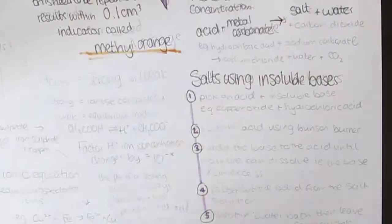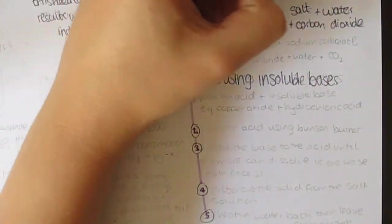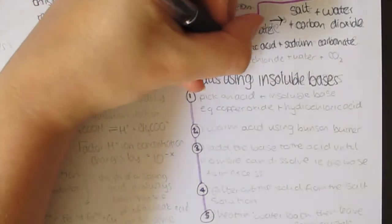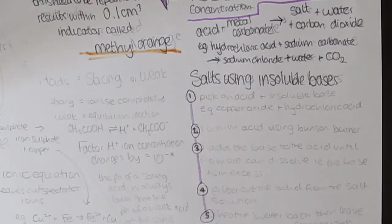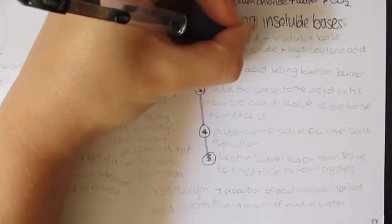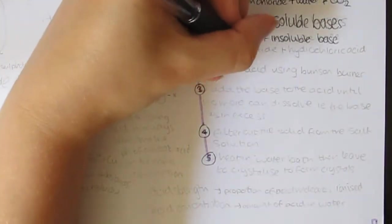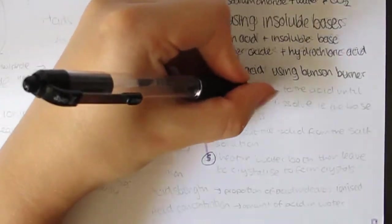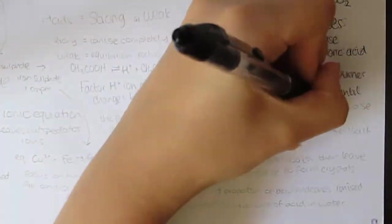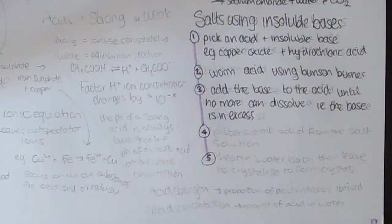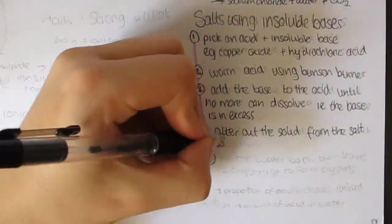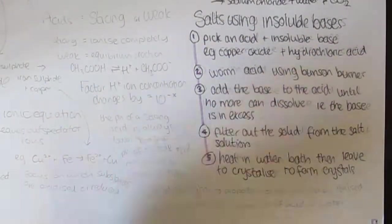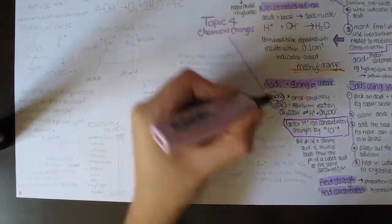You can make soluble salts using insoluble bases. This is also a practical but not a required one. This can be done in five steps: Step one, pick an acid and an insoluble base, e.g. copper oxide and hydrochloric acid. Step two, warm the acid using a Bunsen burner. Step three, add the base to the acid until no more can dissolve, i.e. the base is in excess. Step four, filter out the solid from the salt solution. Step five, heat the solution in a water bath and then leave to crystallize to form salt crystals.